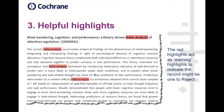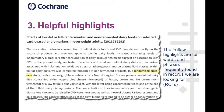We have what we call helpful highlights, based on commonly used words and phrases found in records we're looking for and records that should be rejected. These red highlights act as warning highlights, indicating that the record might be a reject. Here we can see the word 'meta-analysis' is highlighted red — we're not looking for meta-analyses, we're looking for reports of randomised trials. We also have yellow highlights, directing our gaze to the part of the abstract likely to describe the trial design, which in this case is a randomised crossover study, eligible for CENTRAL.